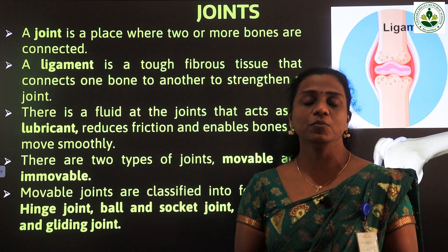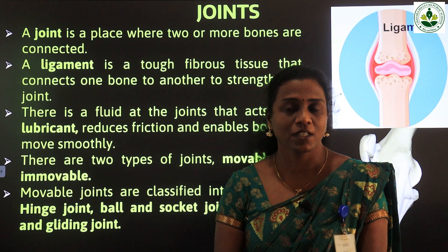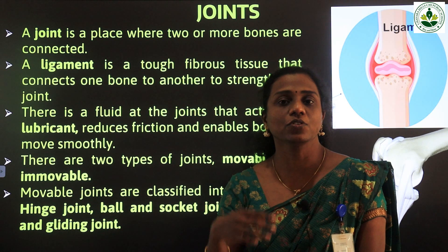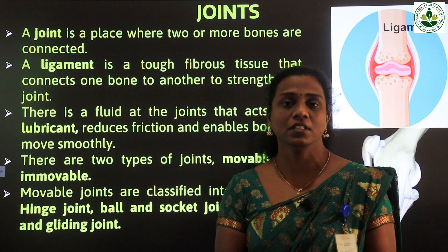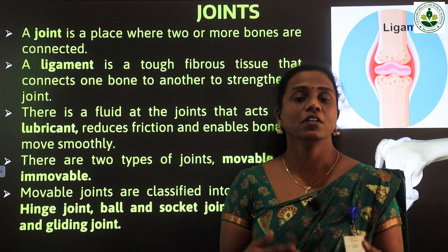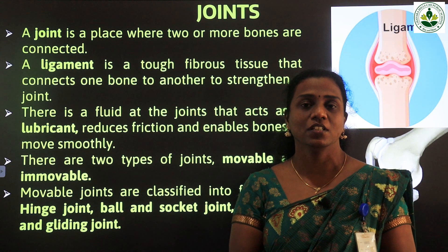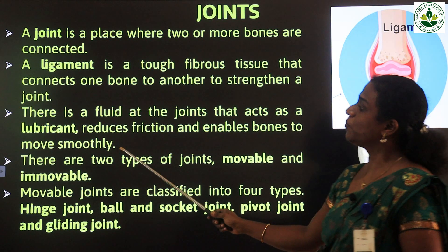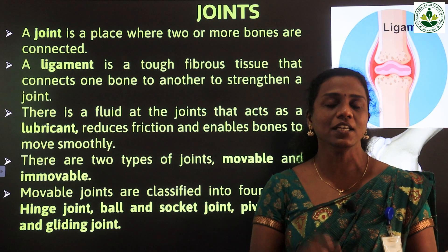As we all know, every day we are doing many movements. Because of the movement there is a chance of friction between the bones. Friction is the rubbing of one surface on another surface. As a result, if movement happens daily, friction will increase. That is why many aged people say that they have joint pains and difficulty in moving joints — because of the increase in friction. So there is a fluid between the bones, known as lubricant. It reduces friction and enables bones to move smoothly.